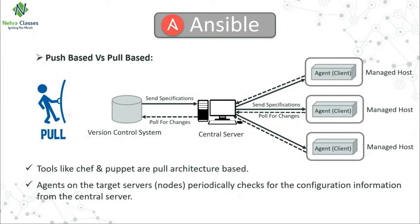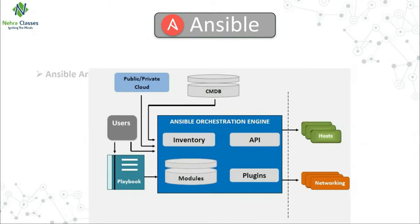For example, the Puppet agent pulls the central server every 30 minutes, so you may have to wait up to 30 minutes to see configuration changes reflected on your nodes — though you can customize the polling interval. The main difference between push-based and pull-based tools is that on pull-based tools, agents play a very important role, whereas no such agents are present in push-based tools like Ansible.